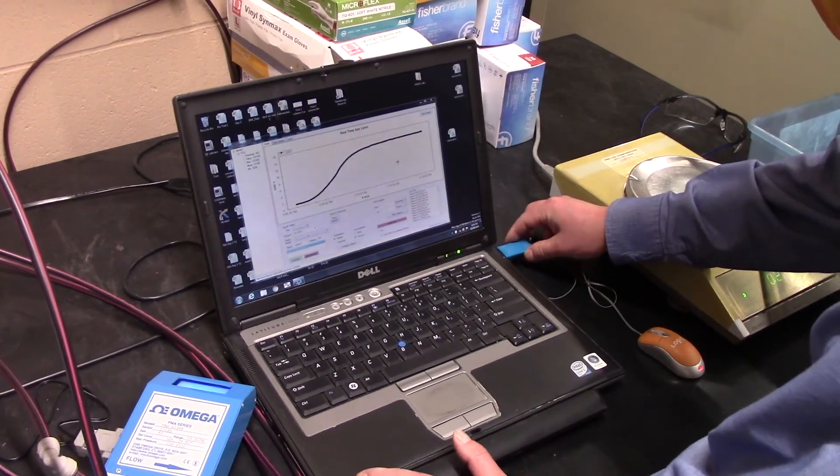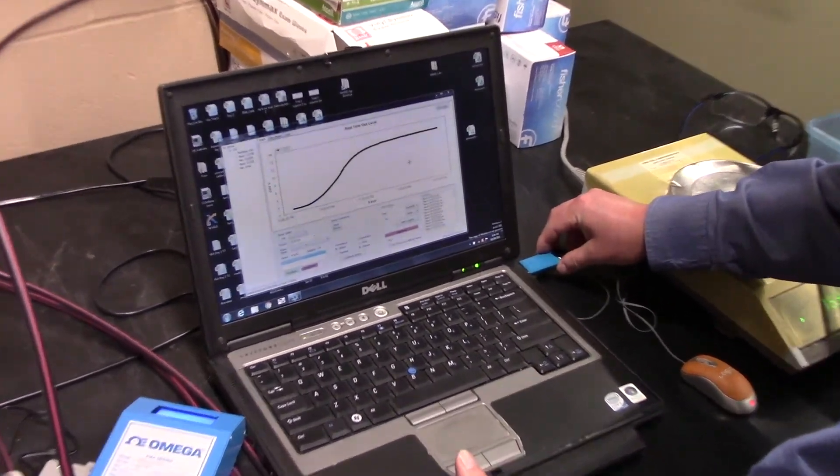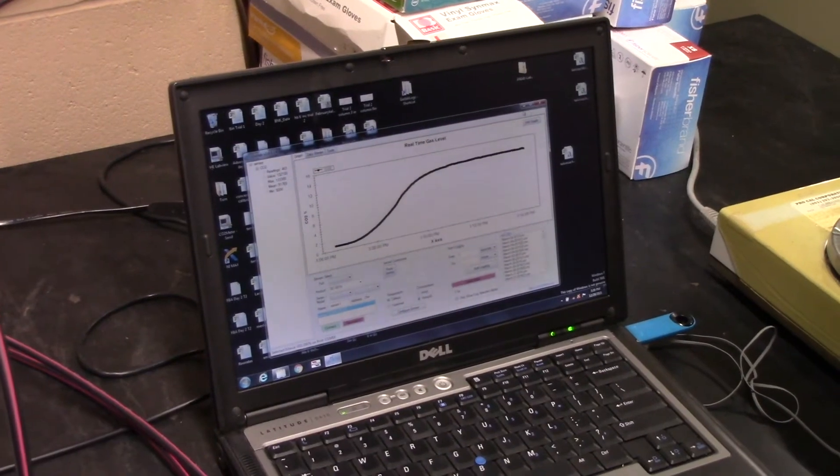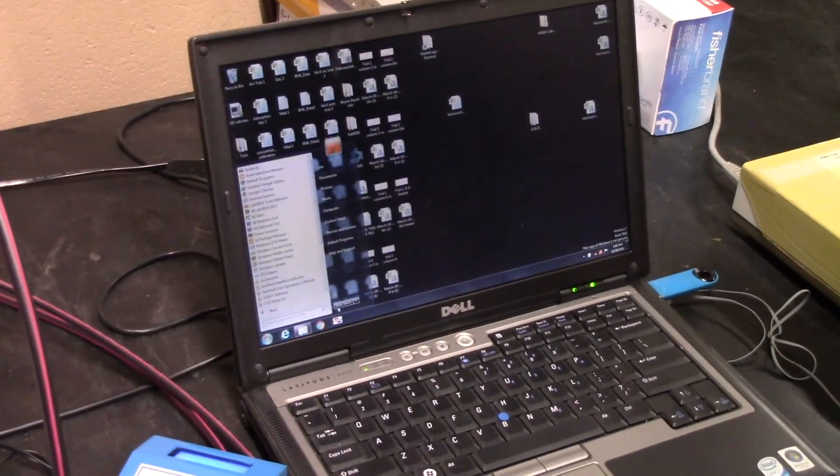Export the data by inserting a USB drive into the laptop. Click on the log files button and transfer over your file. Next, close GasLab and shut down the laptop.